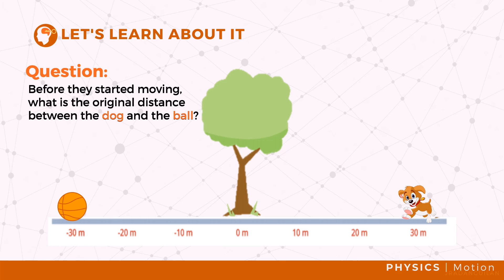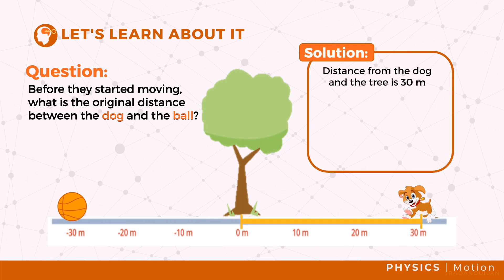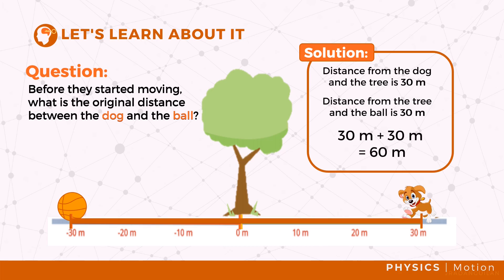We already know that the distance between the dog and the tree is 30 meters, so we just need to find the distance between the ball and the tree. We say that the distance between the tree and the ball is negative 30 meters. However, the negative sign does not mean that the distance has a negative value. It means that the ball is 30 meters away from the tree which has the opposite direction as the dog.